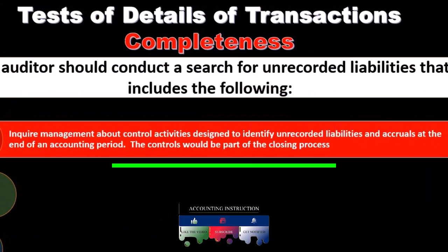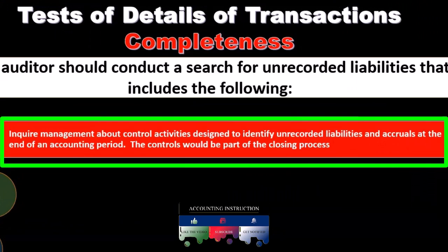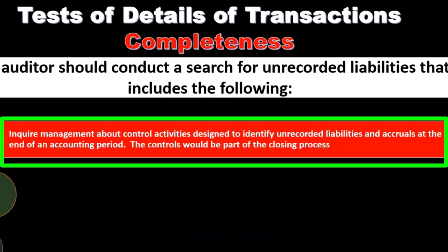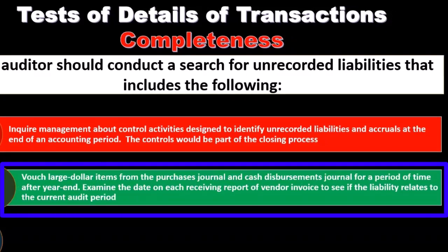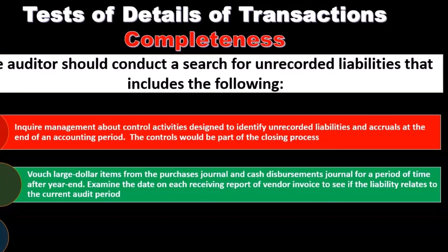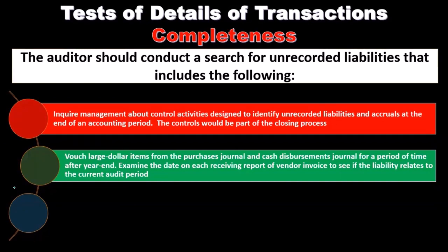To test for completeness, inquire management about control activities designed to identify unrecorded liabilities and accruals at the end of the accounting period — the controls would be part of the closing process. Also vouch large dollar items from the purchases journal and cash disbursements journal for a period after year end, since the audit is conducted after the year-end date, such as December 31.